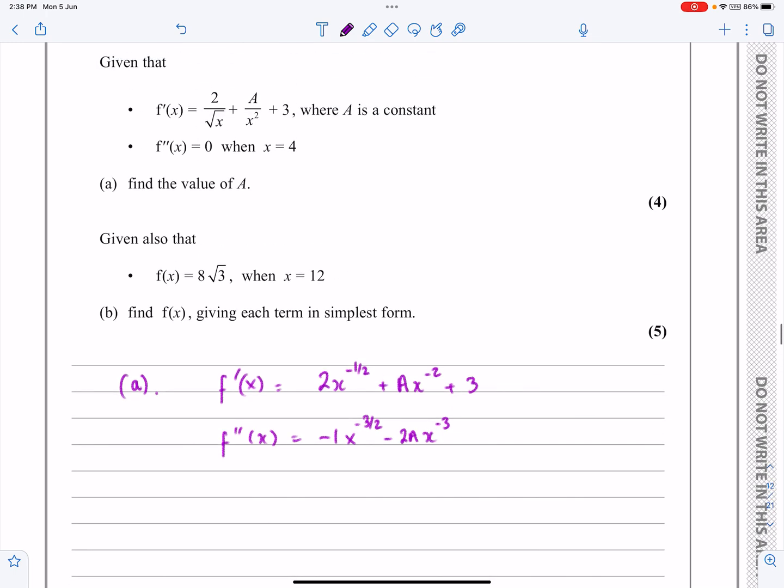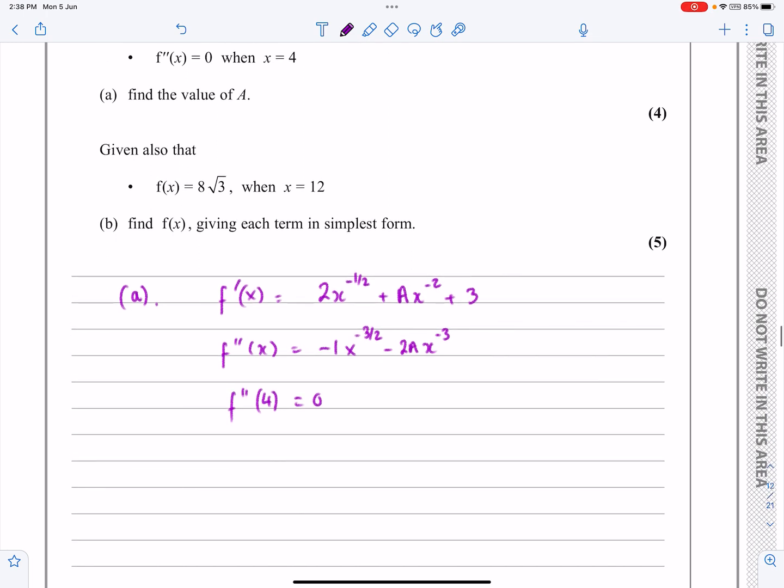And then they've told me in this piece of information here that f''(x), let's write it down properly, f''(4) is equal to 0. So what that means is that if I substitute 4 in, so minus 1, 4 to the minus 3/2, minus 2a, 4 to the minus 3, that works out to be equal to 0.